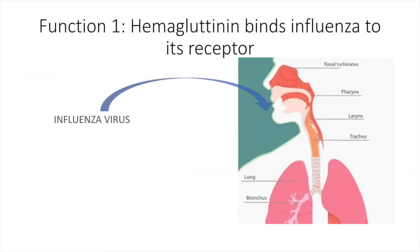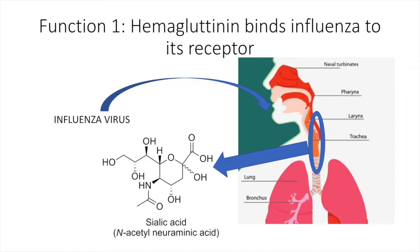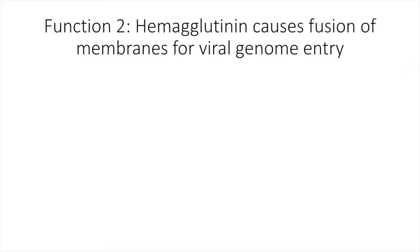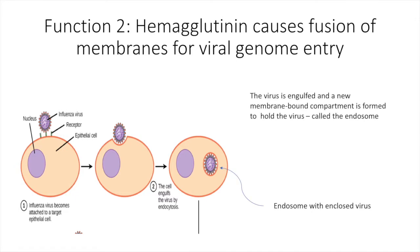Hemagglutinin has two primary functions. One is to bind influenza to its receptor, sialic acid. This occurs in the cells found in the upper respiratory tract and within erythrocytes. Hemagglutinin's other function is to cause fusion of membranes for viral genome entry. Once the virus is engulfed, a new membrane-bound compartment is formed to hold the virus, called the endosome. Hemagglutinin binds the viral membrane to this endosome in order to release the viral genome into the cell.